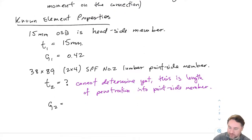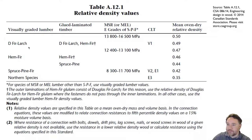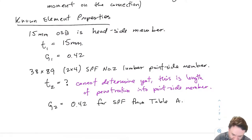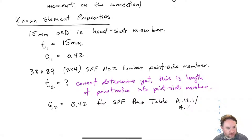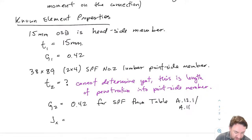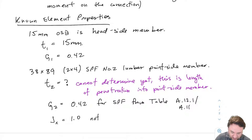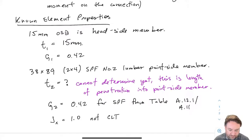We can figure out G2, our mean relative density for the point side member. Going to the table — we're dealing with visually graded lumber, a 2x4 spruce-pine-fir — our G value is 0.42. That's from table A.12.1 in O86-14 and A.11 in O86-19. We also know we'll need Jx in our nailed connection equations, and that equals 1.0 because we are not dealing with CLT — that factor accounts for strength reduction in CLT connections.